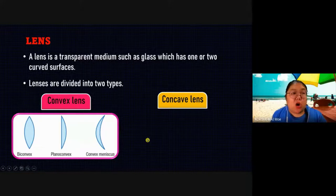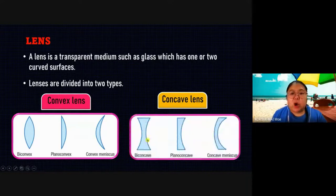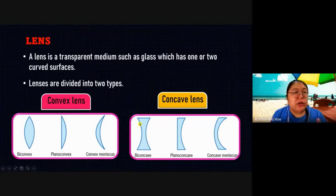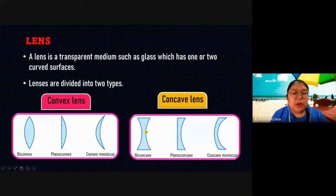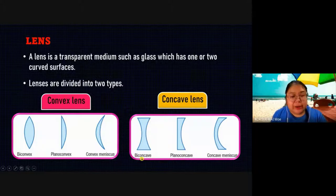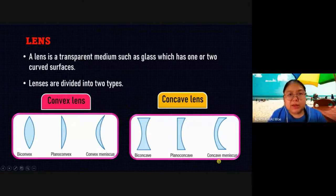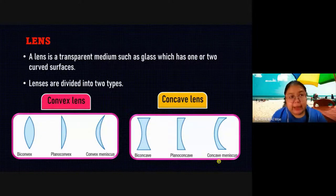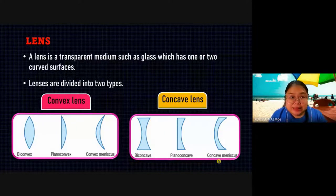These three are all types of convex lens: this one we call biconvex, this one planoconvex, and this one convex meniscus. For concave, the difference is that it is a thin one. Both sides also curve inward, so the body shape becomes slim — thin at the middle. This one is biconcave, this one planoconcave, and the last one is concave meniscus. Make sure you differentiate: convex is the fat one, concave is the thin one.